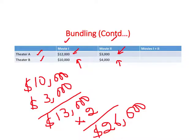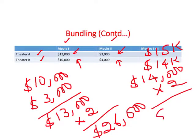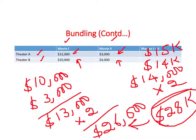Now compare that to bundling. Theater A is willing to pay $15,000 ($12,000 + $3,000) for both movies together, and Theater B is willing to pay $14,000. If the seller bundles and prices the package at $14,000, total revenue is $28,000 — greater than $26,000. Even with a $500 discount for buying the bundle, the monopolist makes more money.